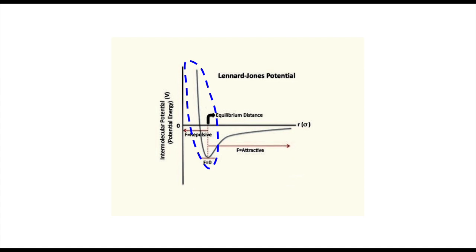First, the repulsive part. When two atoms get very close to each other, their electron clouds overlap, creating a strong repulsive force. This is represented by the steep rise on the left side of the graph. Mathematically, this repulsion is proportional to 1 over the distance to the power of 12.